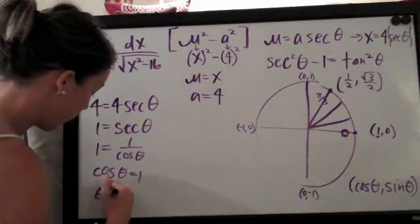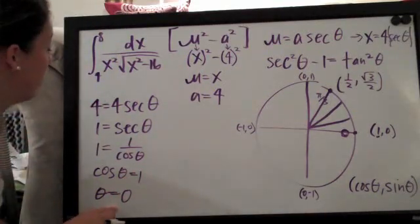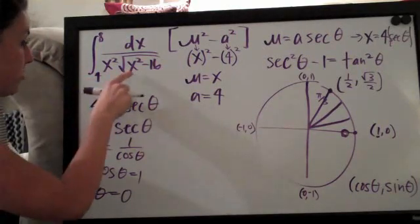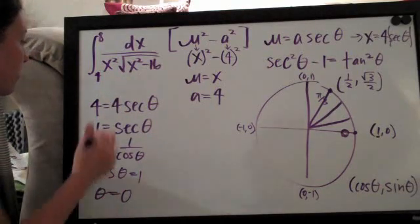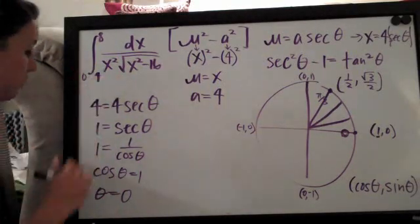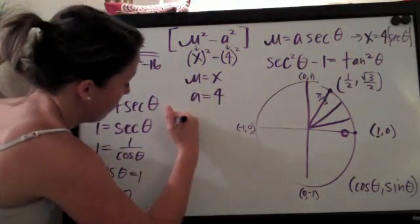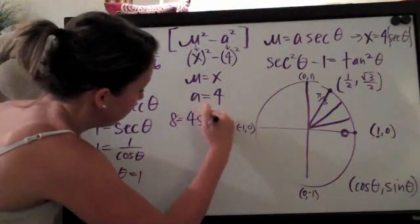So therefore, theta equals zero and that is how we convert this range here from four, which corresponds to x, to zero, which is going to correspond to theta. So I'm going to go ahead and write the zero right there. Then we do the same thing for the eight. So we set eight equal to our x, which is four secant theta.